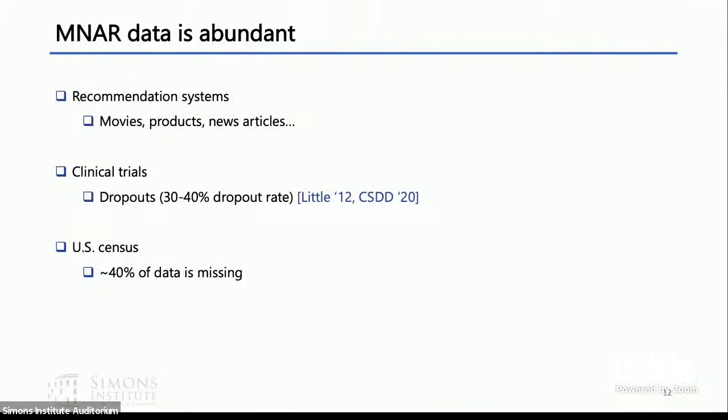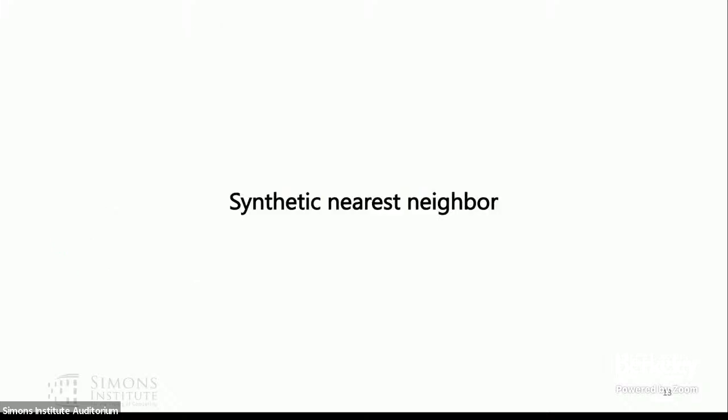This should give you pause because MNAR data is present everywhere. Recommendation systems are present everywhere with movies, products, news articles probably most importantly. But even with clinical trials where you drop out, you can think of that as a matrix completion problem. Or the US census where more than 40% of the data for certain important columns is missing. We need to think very carefully about why your data is missing and how to recover matrices with such missingness patterns.